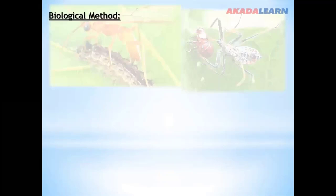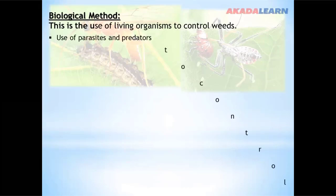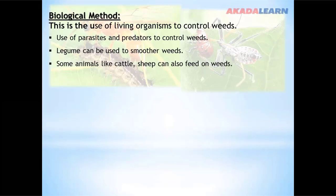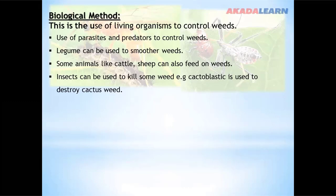The biological method is a weed control method whereby we use the natural enemies of weeds to eradicate them — for example, the use of parasites and predators. Legumes can be used to smother weeds. Animals like cattle and sheep can also feed on weeds. Insects can be used to kill some weeds; for example, Cactoblastis is used to destroy cactus weeds.